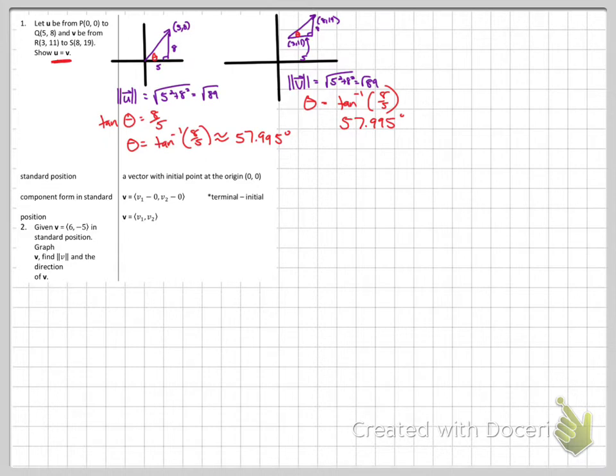Okay, standard position. So up above, vector U was actually in standard position because its initial point was at the origin, 0, 0. We can take any vector and move it to standard position, which would be component form. If you see a vector with these pointy brackets, I honestly don't know what those are called, then you know it's in what's called component form, which means it starts at 0, 0, and then it goes to the given point.